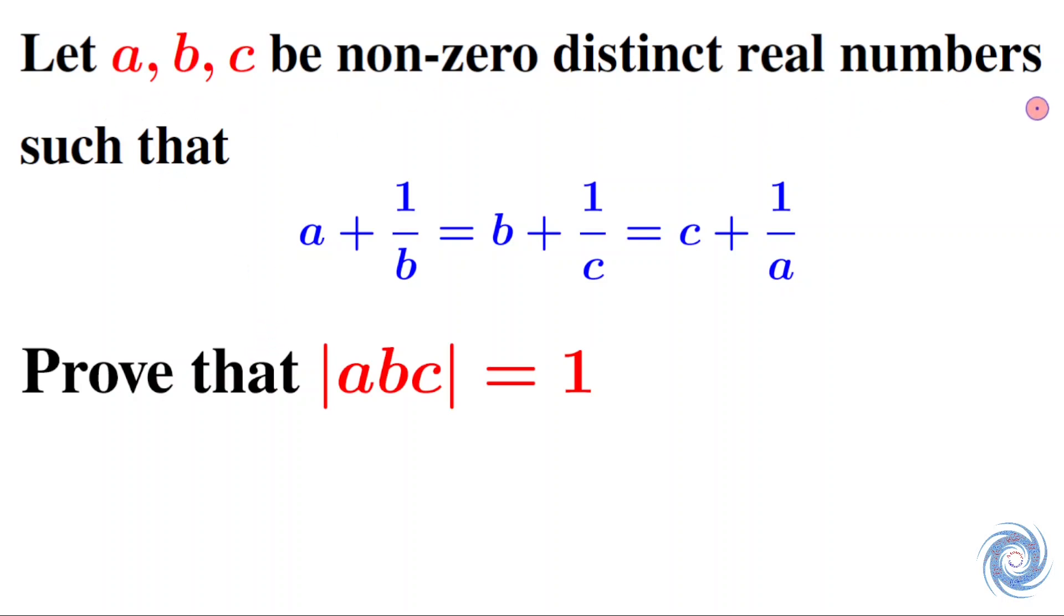The question is: Let a, b, c be non-zero distinct real numbers such that a plus 1 over b equals b plus 1 over c equals c plus 1 over a. We have to prove that the absolute value of abc equals 1.